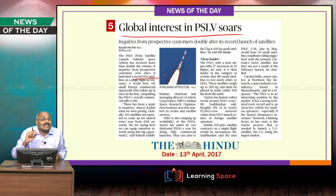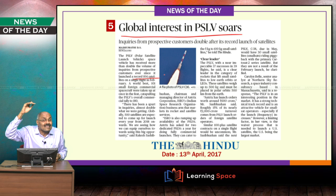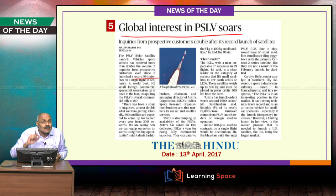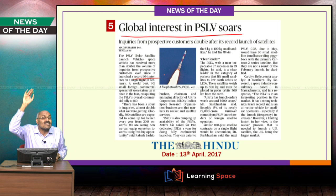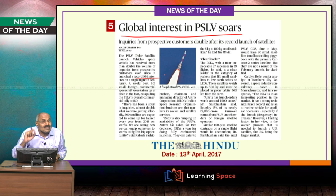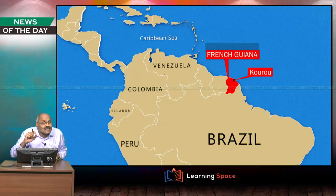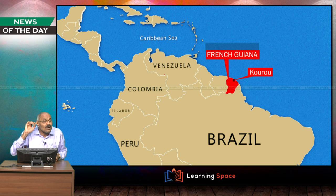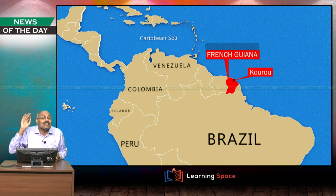However, the problem is placing around 4-ton satellites into geostationary orbit — that is still to be accomplished by India. Whenever a 4000 kg satellite needs to be placed in orbit, we rely on external launch services because we have not yet developed the capability to place heavy-weight satellites into geostationary orbit.